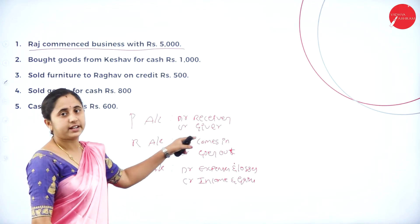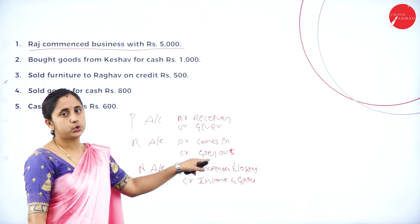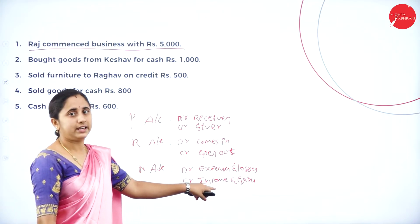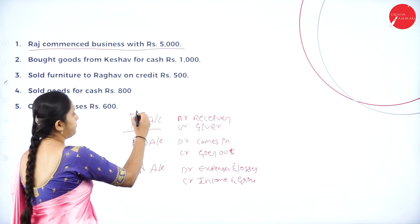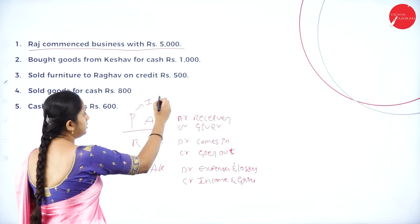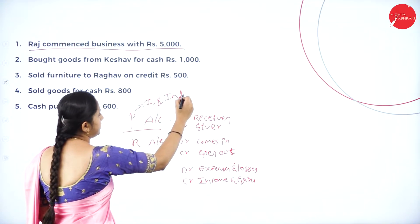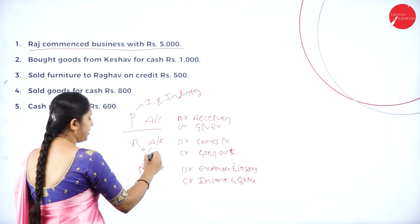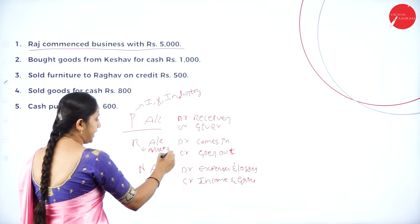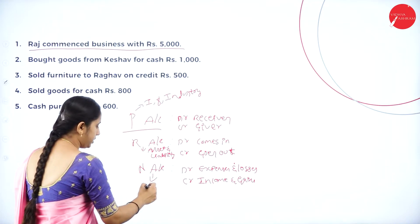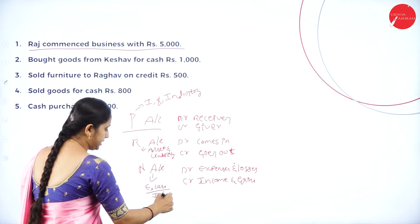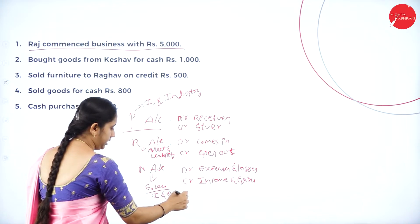Personal account: debit the receiver, credit the giver. Real account: debit what comes in, credit what goes out. Nominal account: debit all expenses and losses, credit all incomes and gains. Personal account includes individual, firm, and industry. Real account includes all assets and liabilities. Nominal account includes all expenses, losses, incomes, and gains.